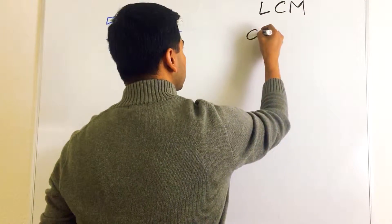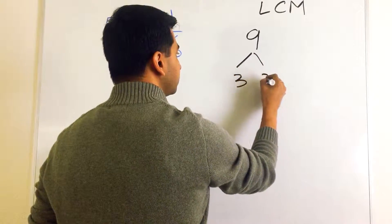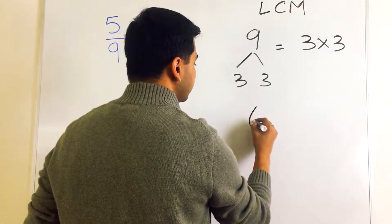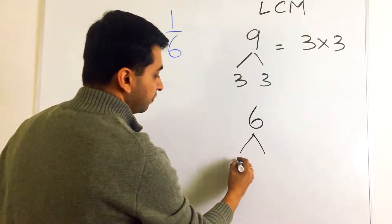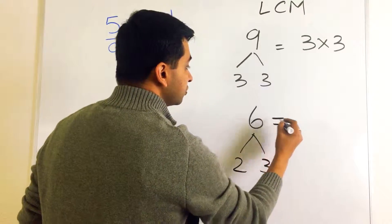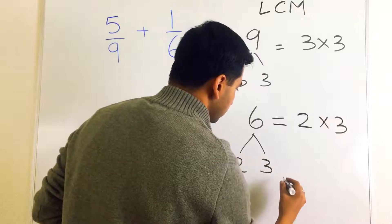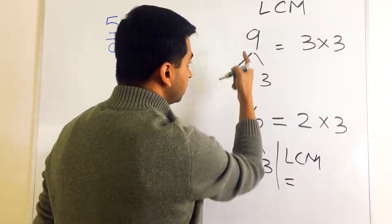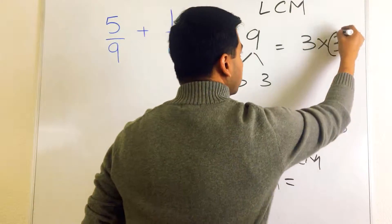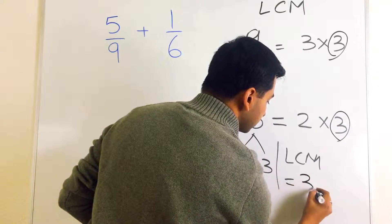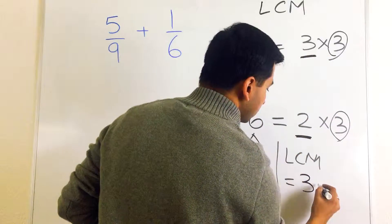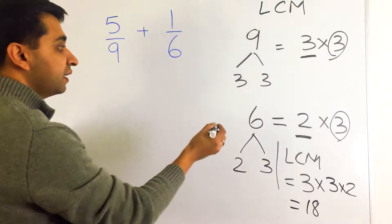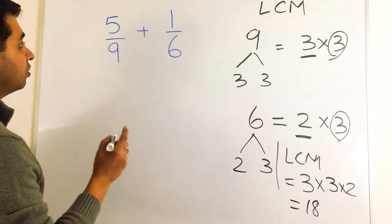Between 9 and 6. We do a little factor tree: 9 becomes 3 multiplied by 3, and 6 becomes 2 multiplied by 3. The LCM between 9 and 6 — we take the common number, which is 3, and then whatever is left: another 3 and a 2. So the LCM of 9 and 6 is 18.